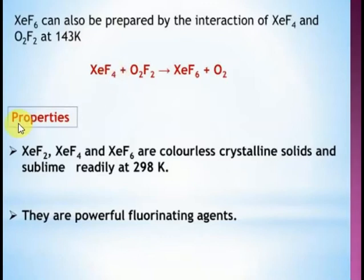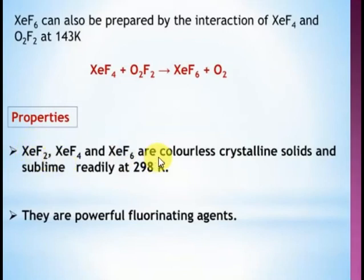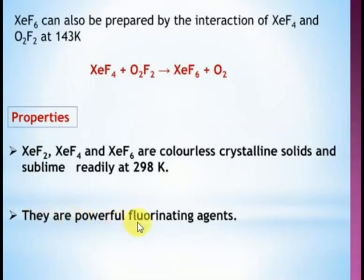Properties: xenon difluoride, tetrafluoride, and hexafluoride are colorless crystalline solids and undergo sublimation — when heated, these solids are directly converted into gases without passing through the liquid state. Because of sublimation, they readily give fluorine atoms. That's why they are called powerful fluorinating agents — fluorinating agents readily provide fluorine atoms for chemical reactions. Most fluorine chemical reactions are exothermic reactions.